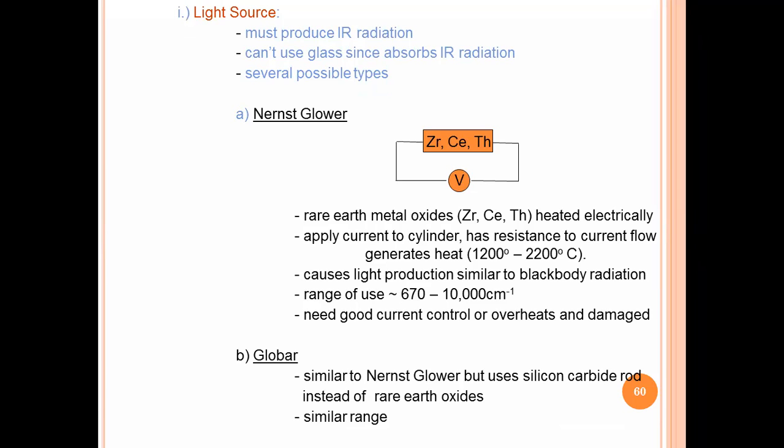If these metal oxides are heated externally electrically, it generates heat or radiations and causes light production similar to blackbody radiation in the range of 670 to 10,000 per centimeter wave number. It needs good current control or overheats.